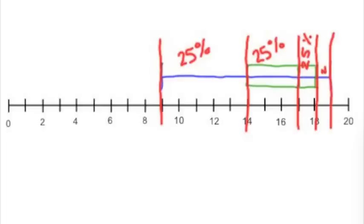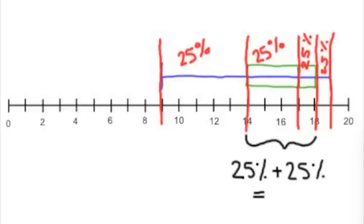Each part of the box and whisker plot represents 25%. The interquartile range contains two of the four parts, so that represents 50%. That means 50% of the players made between 14 and 18 shots.